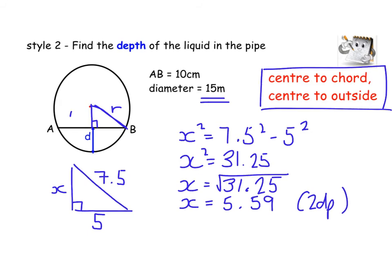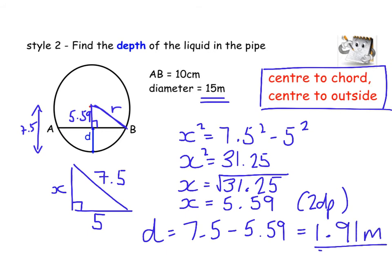Now what I've just worked out is that this little bit here is 5.59. We want the depth of the liquid, so this bit here from the centre to the bottom, remember that was our radius so that was 7.5. So to get the depth that I want I'm going to take the bit I worked out away from the radius, so I'm going to do 7.5 take away 5.59 which leaves me with 1.91 metres. So the depth of my liquid is 1.91 metres. My first scenario when it's the height of a tunnel was finding the radius plus your answer. This one, depth of liquid, is your radius minus the answer.